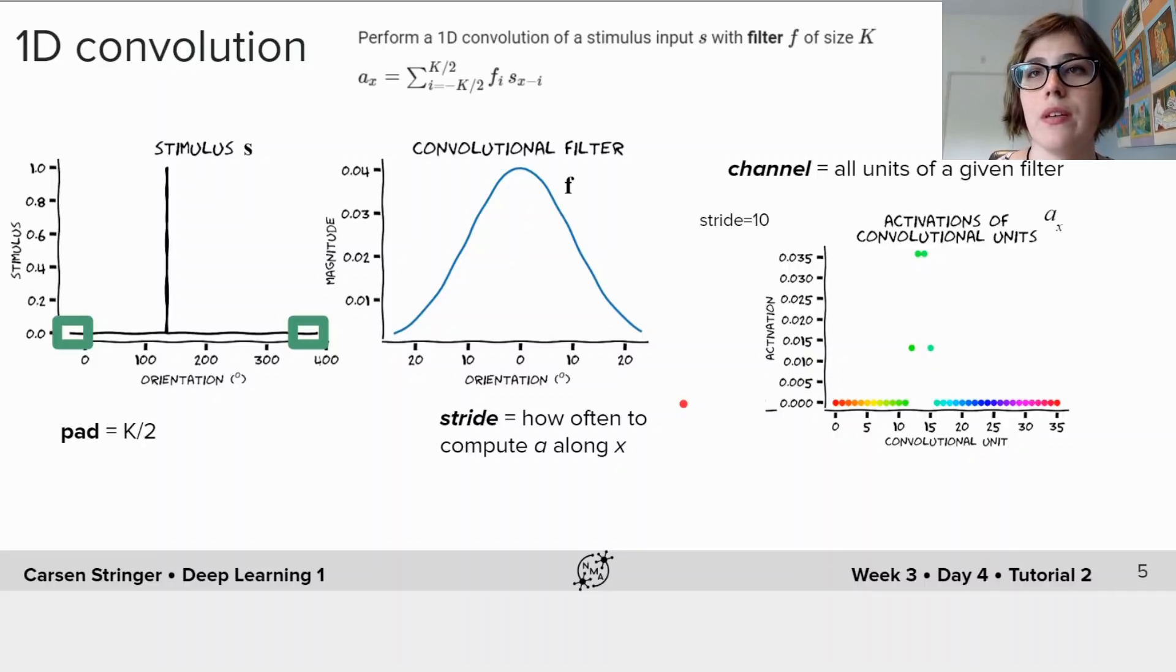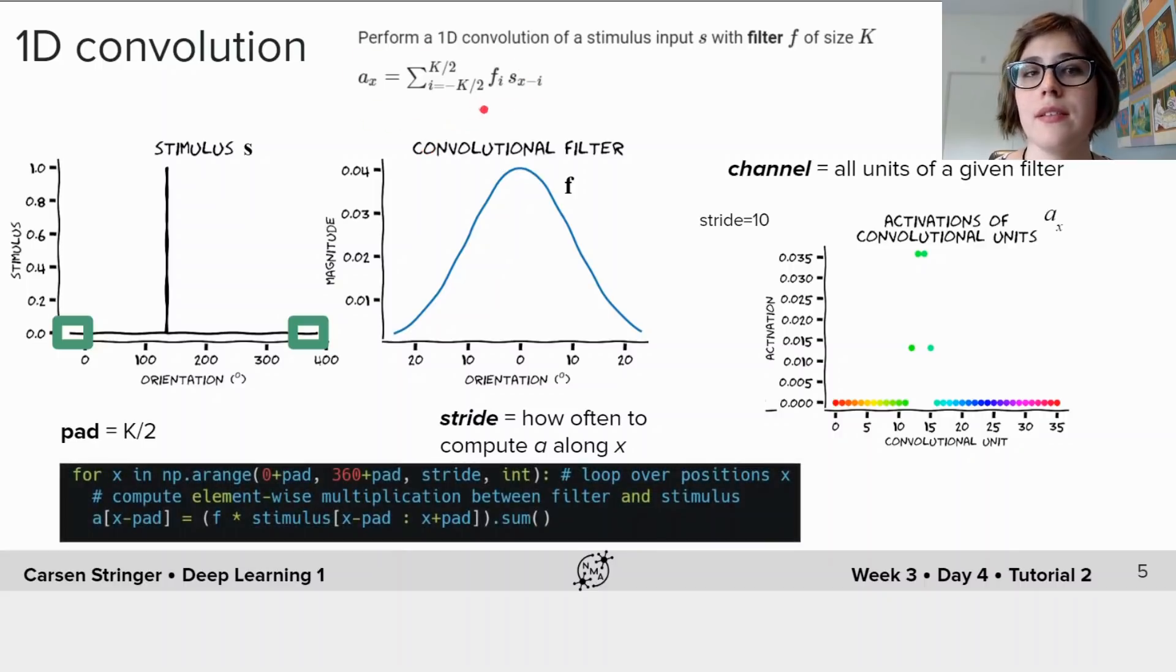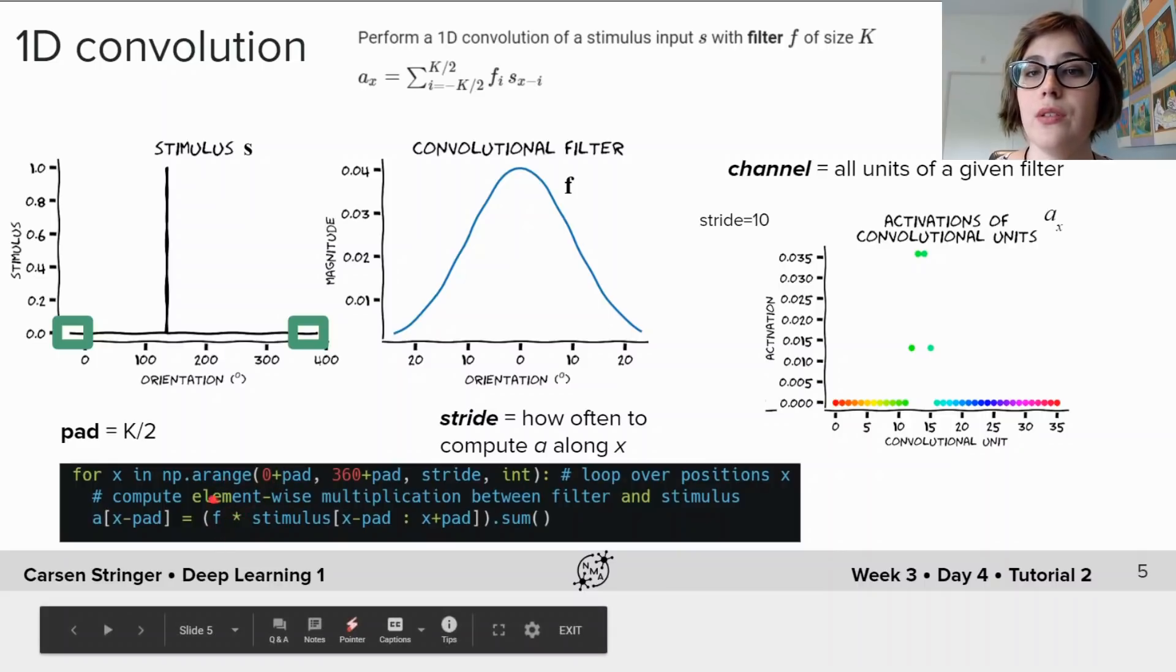So now how do we compute this convolution? We can loop over these positions x with some spacing which is the stride, and then at each of these positions x we're going to take the sum of the product of the filter and the stimulus.